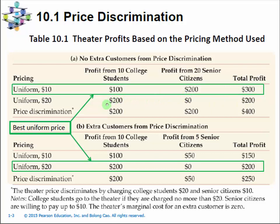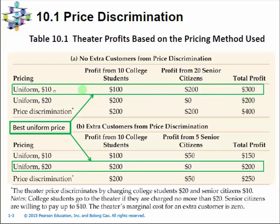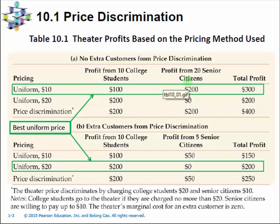If we look at uniform pricing at $20 per ticket, now only the college students would buy tickets — you've excluded the senior citizens, who only want to pay $10. So the total revenue is just $200, which is lower than $300. With this customer base of 10 college students and 20 senior citizens, the lower uniform price gives better profit because it brings in the larger senior citizen customer base. So $10 is the profit-maximizing price.